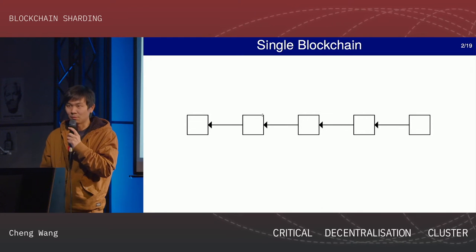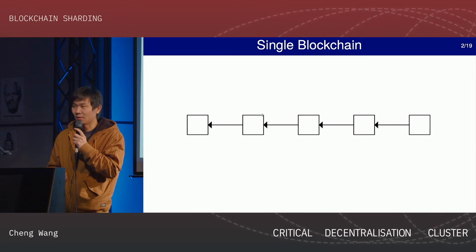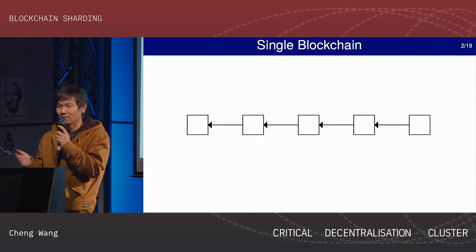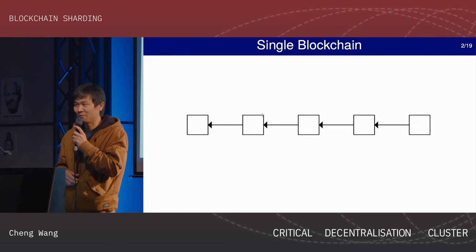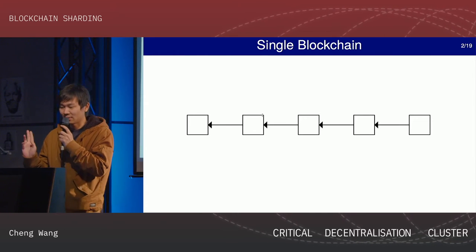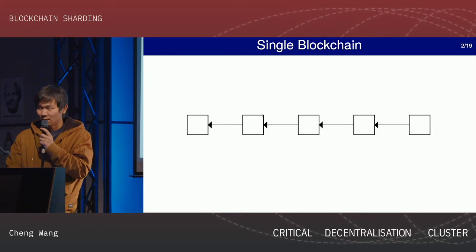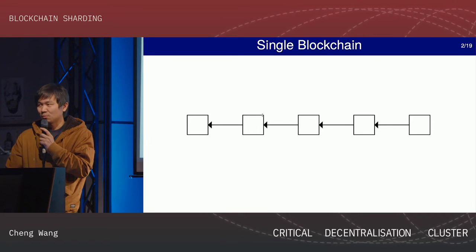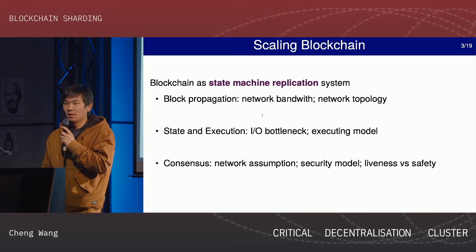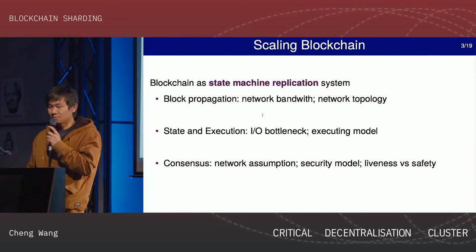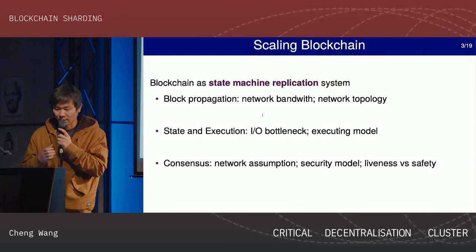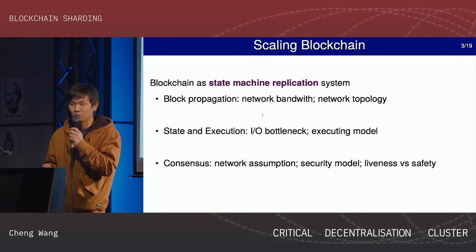So here is a single blockchain — let's say it's Bitcoin or Ethereum — and we want to improve the transaction throughput. Probably you've all heard about the scalability trilemma. It says that if you want to scale the blockchain, we need to sacrifice one of the three dimensions to some extent. Here is a more academic model to analyze blockchain. We usually say blockchain is a state machine replication system. For state machine replication, it has three parts: data, execution, and consensus.